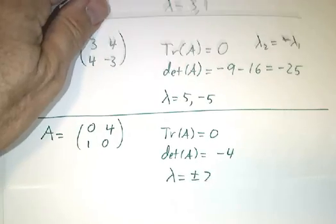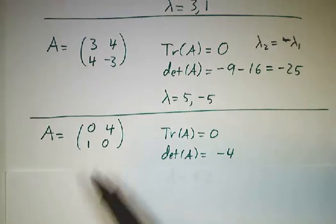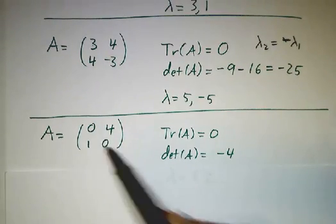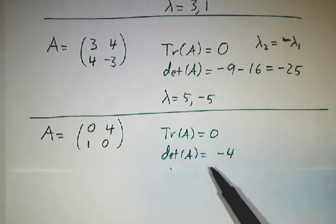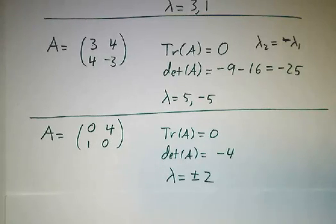If you look at this matrix (0 4; 1 0), its trace is 0 and its determinant is negative 4. So the eigenvalues have to be 2 and minus 2.